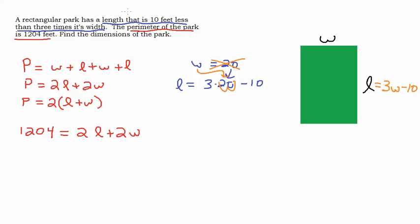This whole less than phrase here is subtraction. But you have to remember to switch the order. A mistake that algebra students make is to do 10 minus 3W. They go 10 feet less than three times the width. That's not right. If it's 10 feet less than three times the width, you have to do three times the width and then take 10 less than that, subtract 10 from that. So that's something to watch out for when you see less than, then you know you need to switch the order.